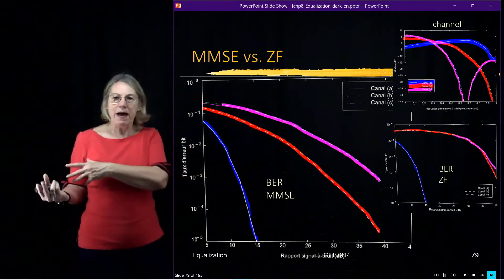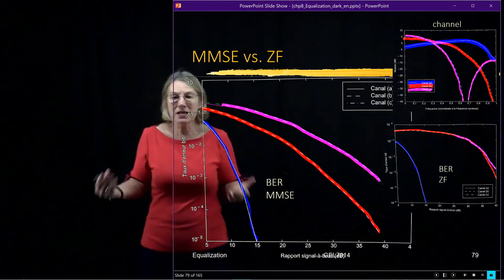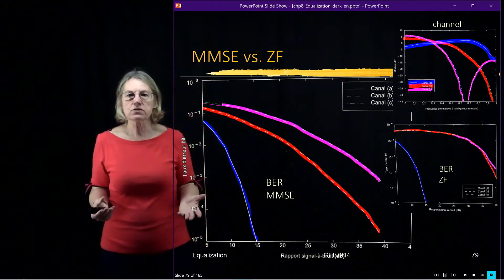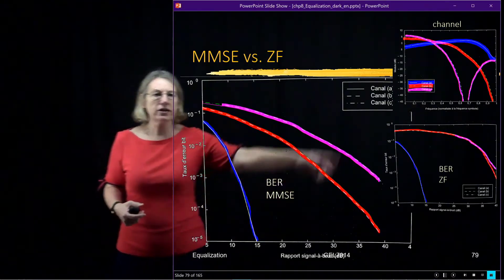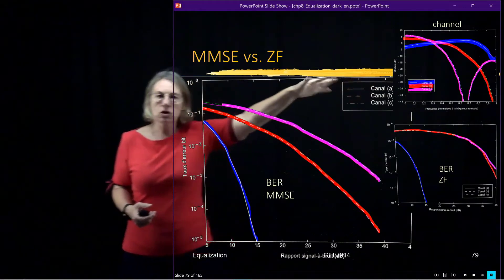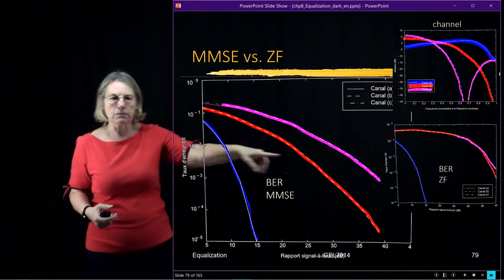So you can see, which is better, MMSE or zero-forcing? Well, it depends on the channel. And there are channels where we're going to get more improvement, channels where we're going to get less. And if we look at the frequency domain, we might get some clues on what we expect in terms of the improvement.